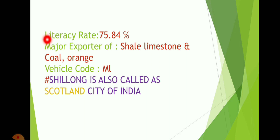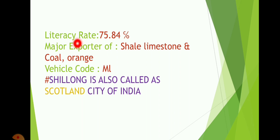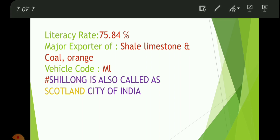The literacy rate of Meghalaya state is 75.84% — that's quite good. The major exports of Meghalaya are salt, limestone, coal, and oranges. And the vehicle code of Meghalaya is ML.